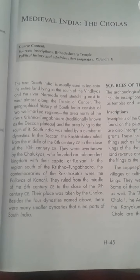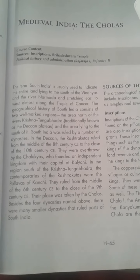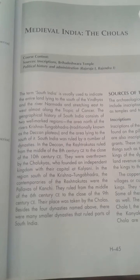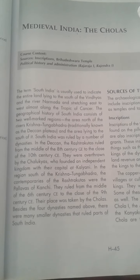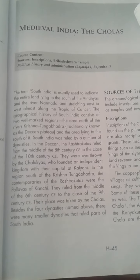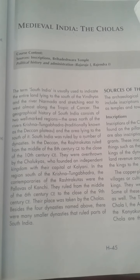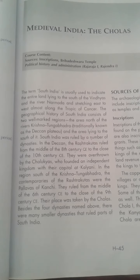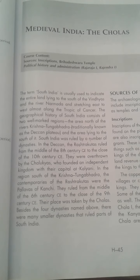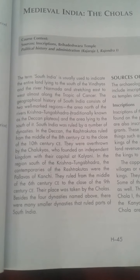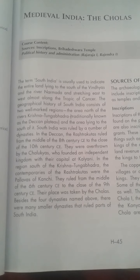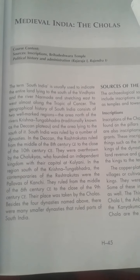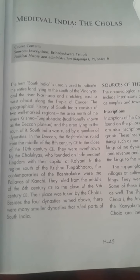South India was ruled by a number of dynasties. The first dynasty was the Rashtrakutas. They ruled in the Deccan from the middle of the 8th century to the 10th century. They were overthrown by the Chalukyas, who made their independent kingdom called Kalyani. After this, the Pallavas of Kanchi ruled over the Krishna-Tungabhadra region. And at last, their position was taken by the Cholas. These were the four major dynasties that ruled over South India.